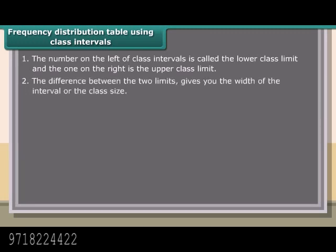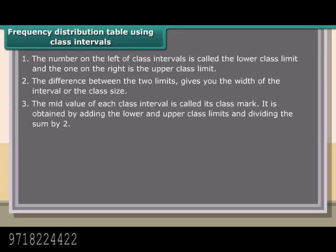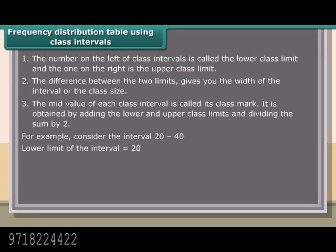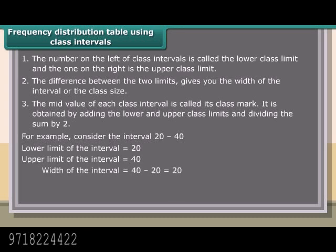2. The difference between the two limits gives you the width of the interval or the class size. The mid-value of each class interval is called its class mark. It is obtained by adding the lower and upper class limits and dividing the sum by 2. For example, consider the interval. Lower limit = 20, Upper limit = 40, Width = 40 minus 20 = 20. Class mark = (20 + 40) / 2 = 60 / 2 = 30.